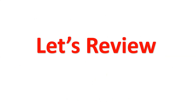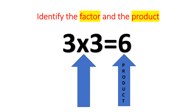Let's review some of the things we learned last week. Identify the factor and the product. So 3 times 3 is our factor, and the product is 6. A factor is the two numbers you multiply together, and a product is the answer after the equal sign, or the answer you get after multiplying your factors together.